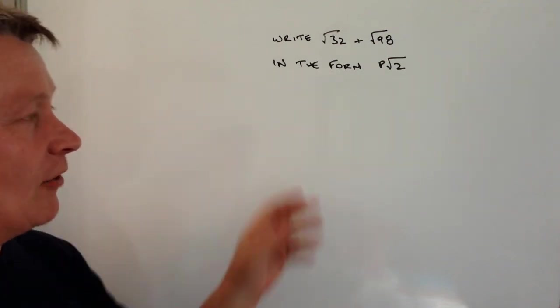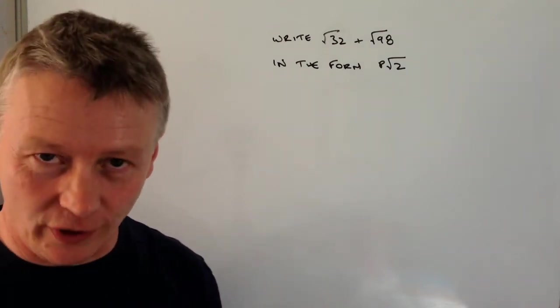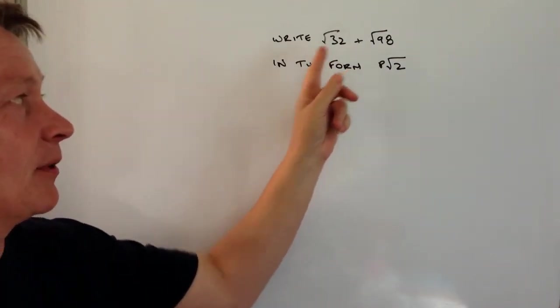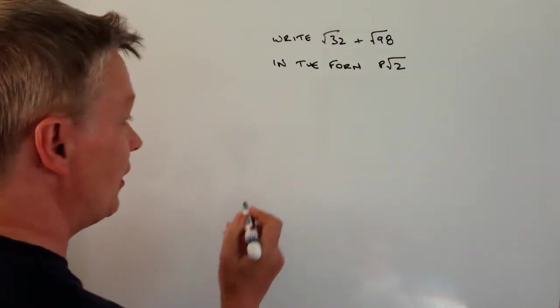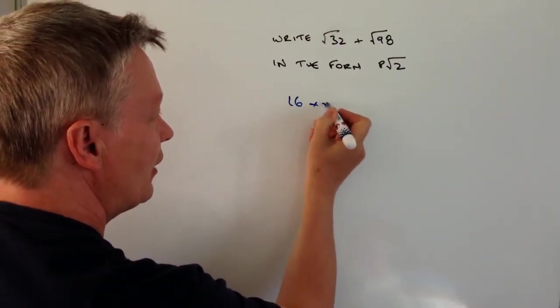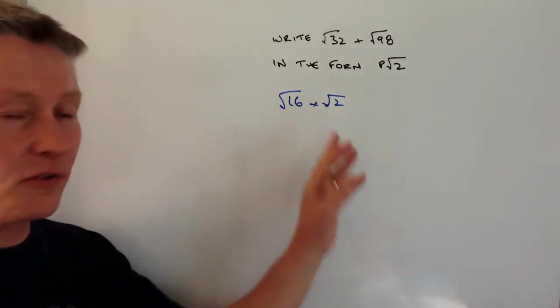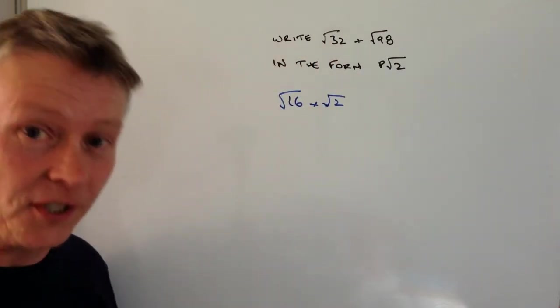Really, the key area with these that you need to bear in mind is that you need to create a situation where you're multiplying two numbers together to make 32, one of which is a square number. So if you imagine that root 16 times root 2 is actually root 32.